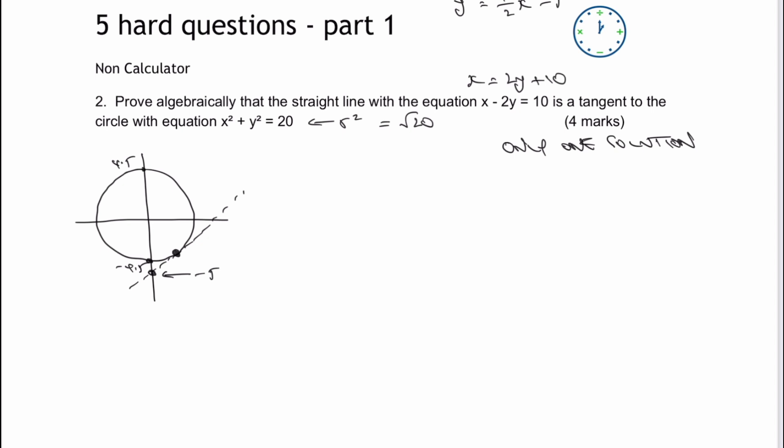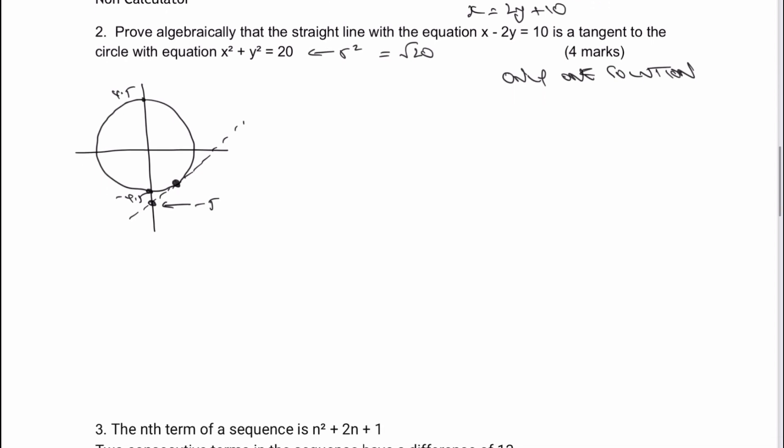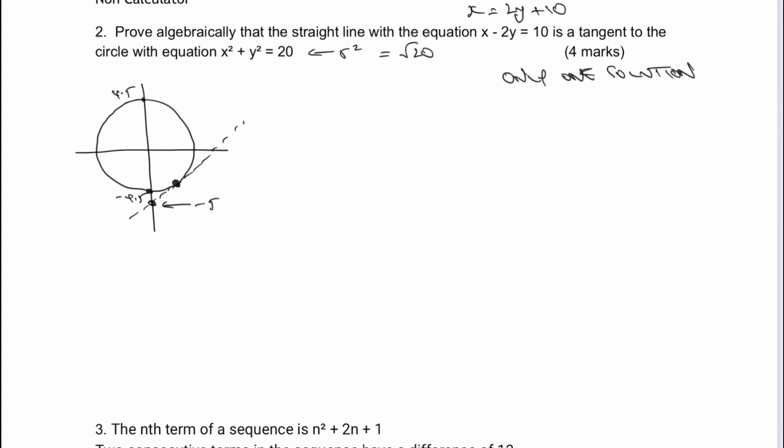So as I mentioned before, the way to deal with this is to substitute into the equation for the circle. So the equation for the circle I've got is x squared plus y squared equals 20. And rather than writing x, I'm going to write 2y plus 10. Don't forget that's going to be squared. So 2y plus 10 again plus y squared equals 20. And then really, it's just a case of solving for x.